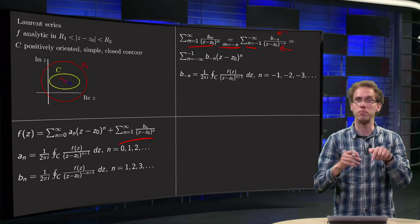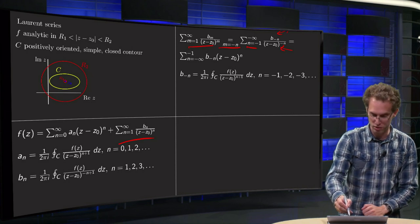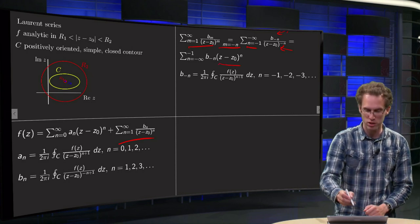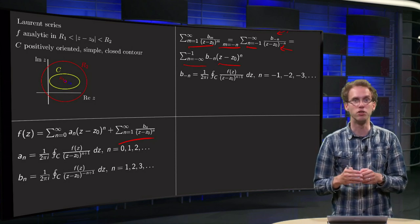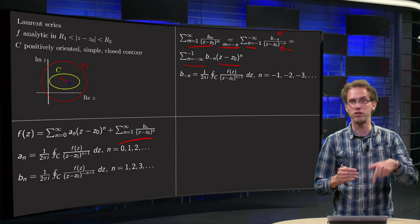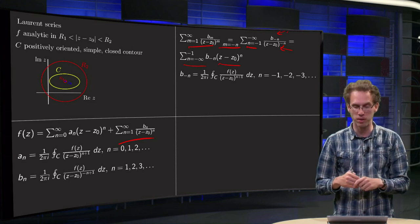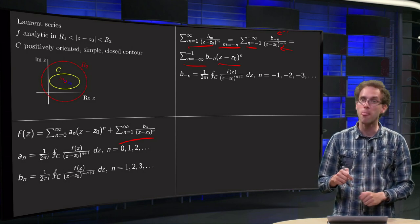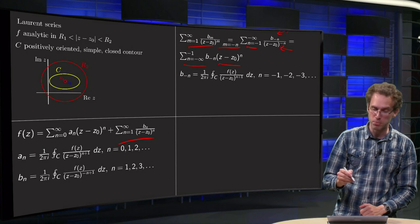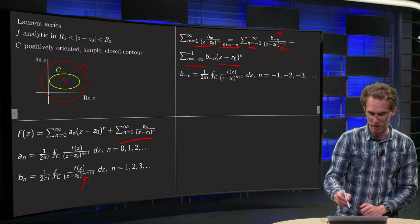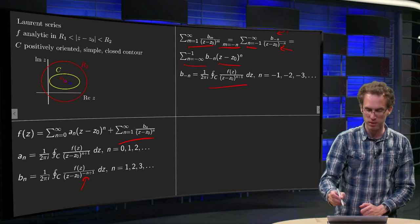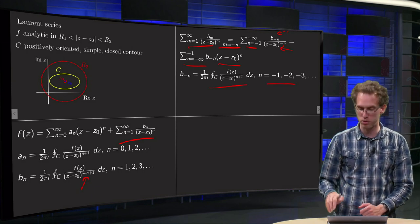So, 1 over z minus z0 to the power of minus n is of course z minus z0 to the power n. So we can simplify a bit and change the summation sign. It doesn't matter whether you sum from minus 1 to minus infinity or from minus infinity to minus 1. You get the same result. And we can write the expression for the b minus n. That means we have to plug in the minus n over here. So we get this expression for n equals minus 1, minus 2, minus 3, etc.